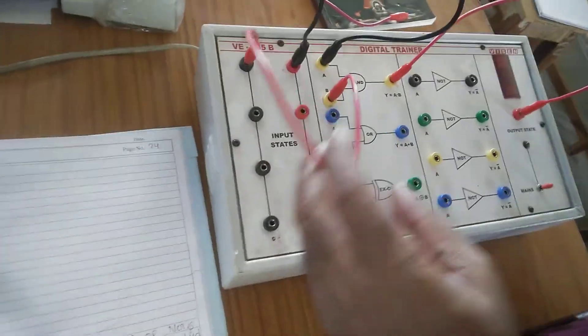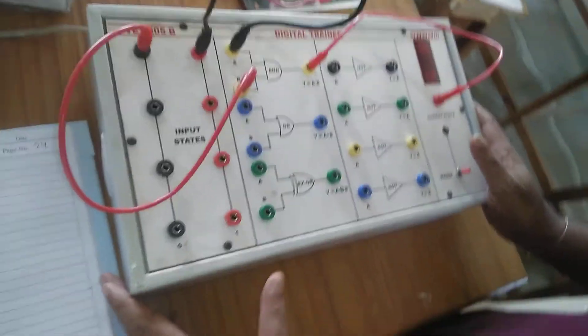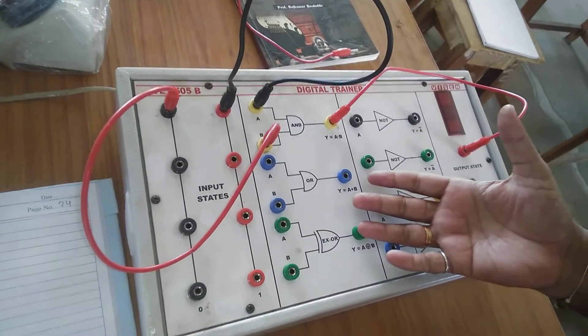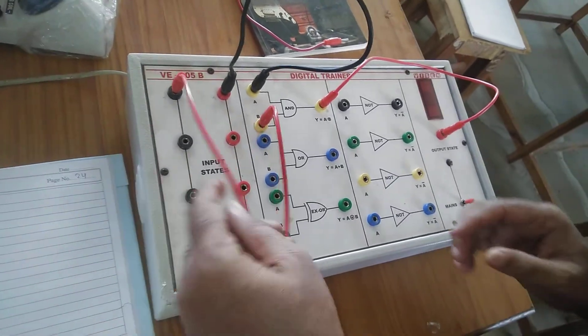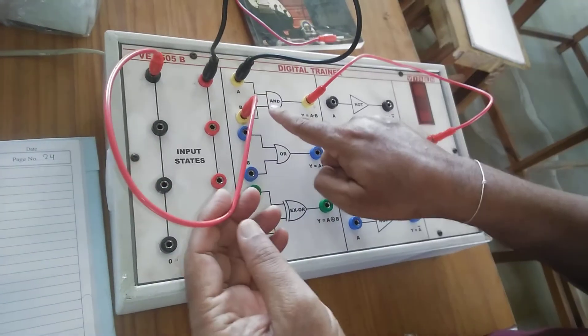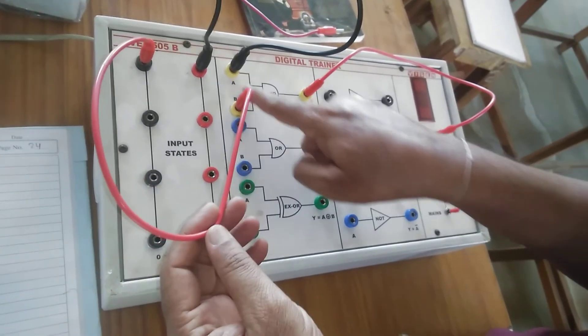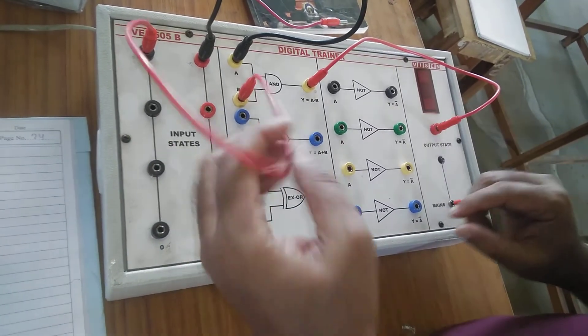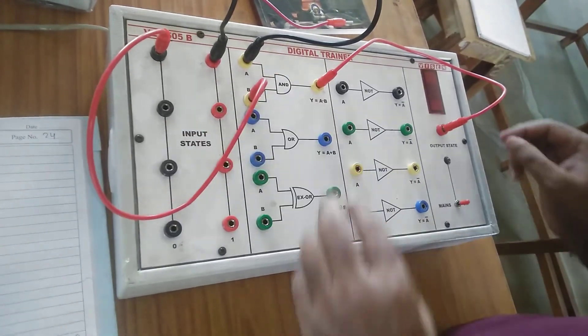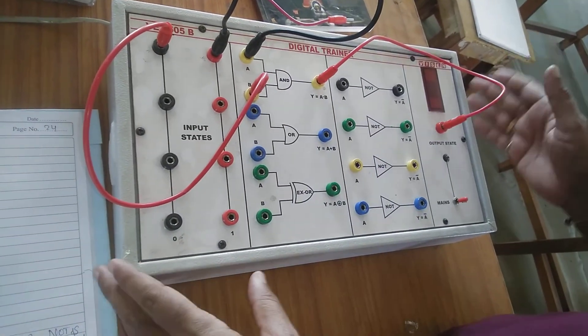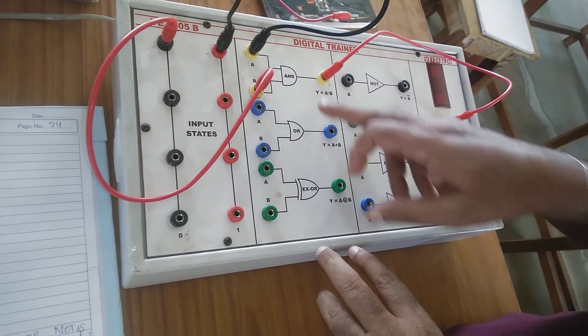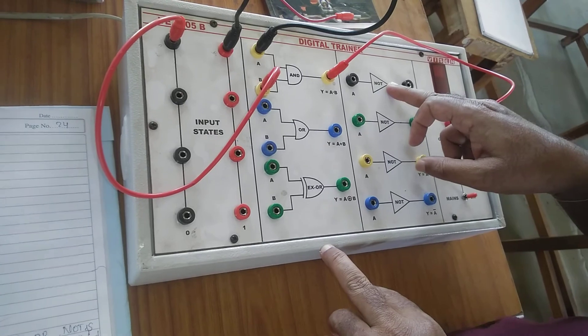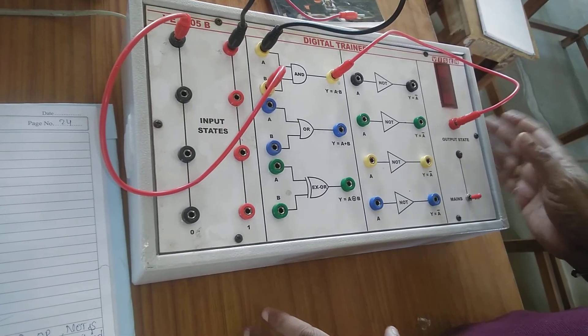Now we come to the board. This is the digital trainer board — the circuit is already built in. We take the two inputs A and B for the AND gate, and the output Y is equal to A dot B. We verify the output for all input combinations, and similarly verify the OR gate, XOR gate, and NOT gate on the board. This completes the construction and verification of the logic gates. Thank you.